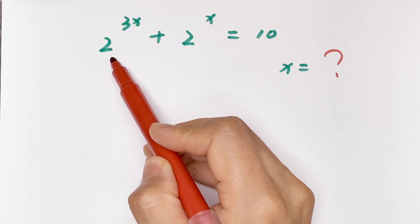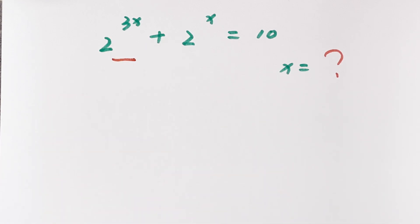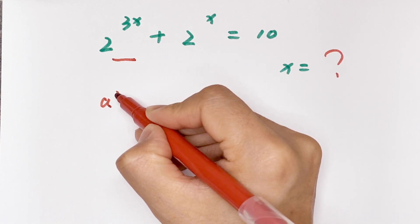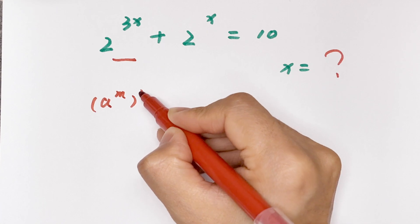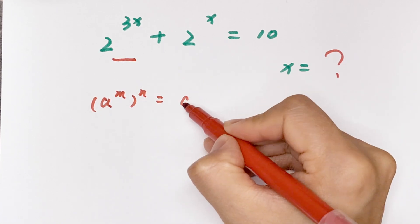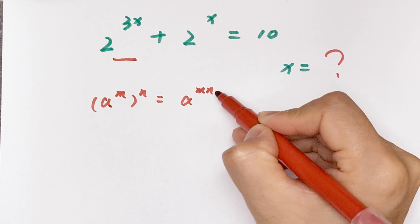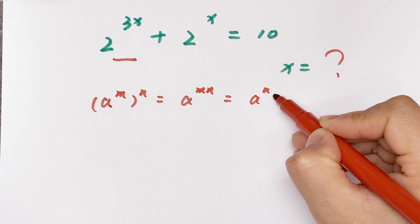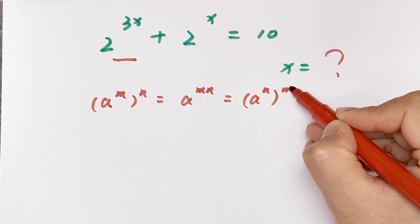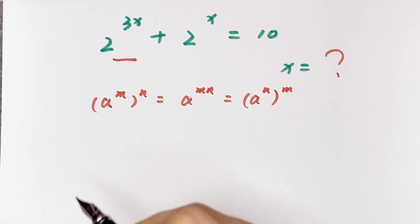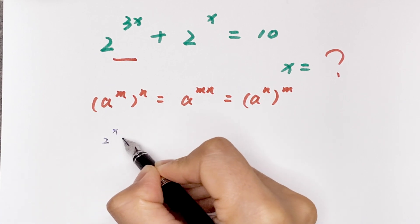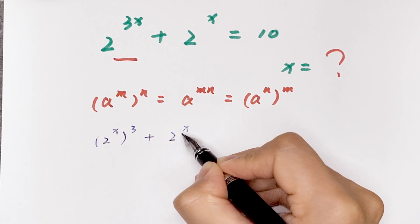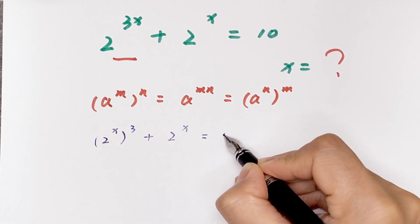From 2 to the power 3x, we apply the exponential rule that a to the power m, to the power n, is equal to a to the power mn — equivalently, a to the power n, to the power m. So this becomes 2 to the power x, cubed, plus 2 to the power x, is equal to 10.